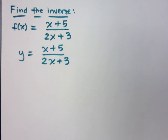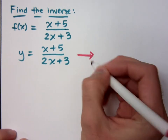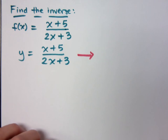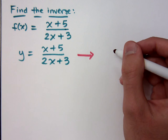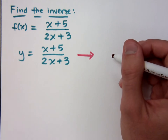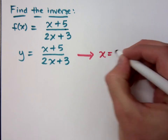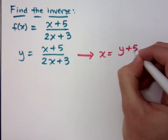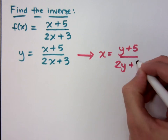Since we're talking about doing the inverse, we need to change the x to y and the y to x. So x is equal to y plus 5 over 2y plus 3.